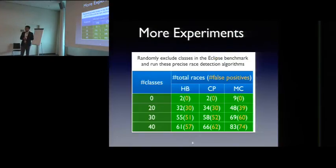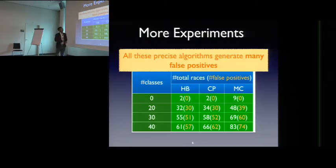And because of this, all the three precise algorithms happens-before, causal-precede and maximal-causality, all report false positives. Actually, the only real race in this example is between line 5 and line 8, which concurrently update the bank total variable. But all the others caused by this part are false positives. And we did more experiments. So we tested on the popular Eclipse IDE benchmark, which is very large. And we randomly exclude classes. And run this precise race detection algorithm based on some traces. And when we don't exclude any classes, all the three precise algorithms report races. And MC is more powerful, but none of them report false positives. But when we exclude more classes, we find all the three precise algorithms generate many false positives.